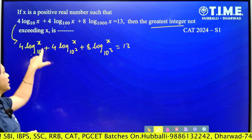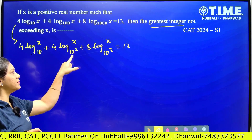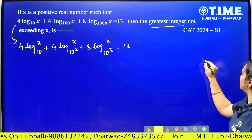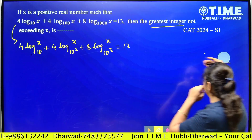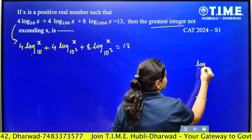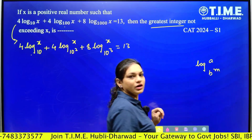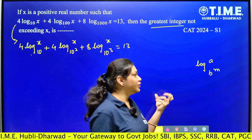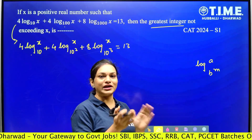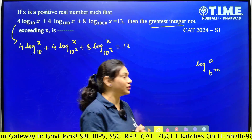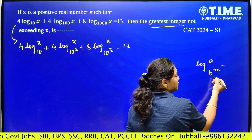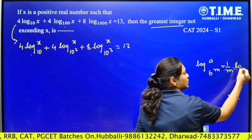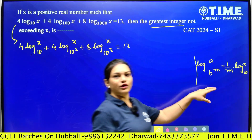Now, in the first condition we have log x base 10, and in the second we have log x base 10 squared. Using the power rule concept: when the base has a power, as in log A base B^M, that power becomes a reciprocal multiplied outside — so it equals (1/M) × log A base B. In this question, to the base we have a power, so we apply this rule.